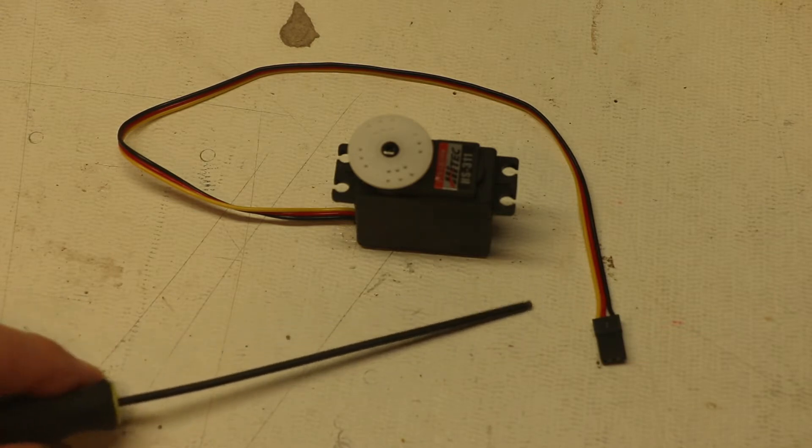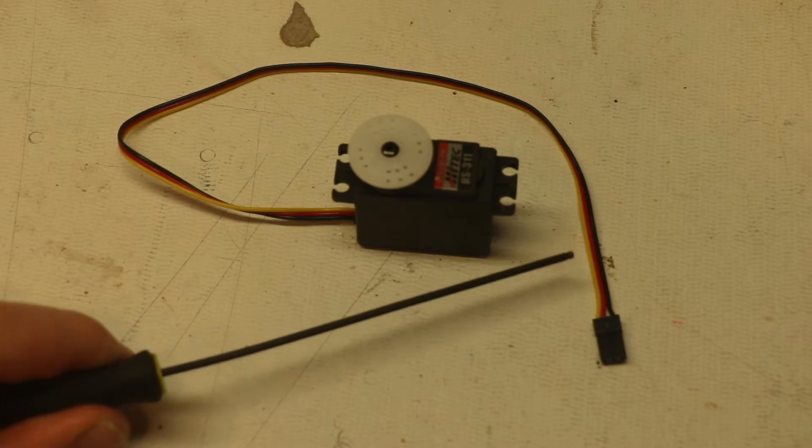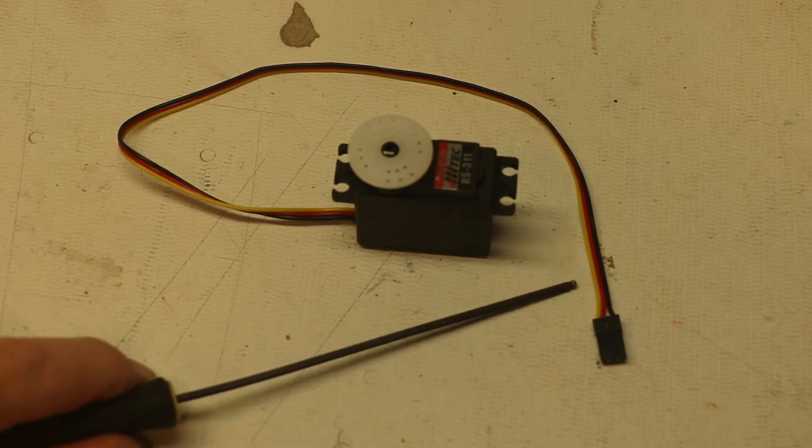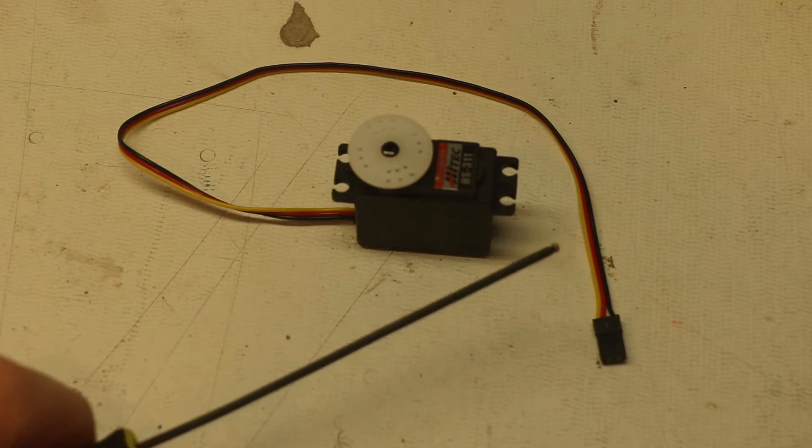Now this is a brand new high-tech servo and you'll notice it has a yellow, red, and a black wire. The yellow is signal, red is power, and black is ground.